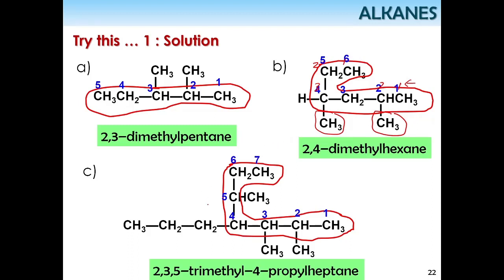The full name is 2,3,5-trimethyl-4-propylheptane. This is the propyl group and there are three methyl groups. That's it for today. I hope you get the idea of how to name structures. Good luck.